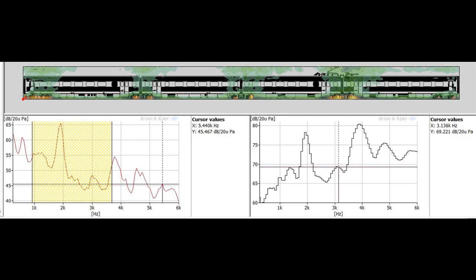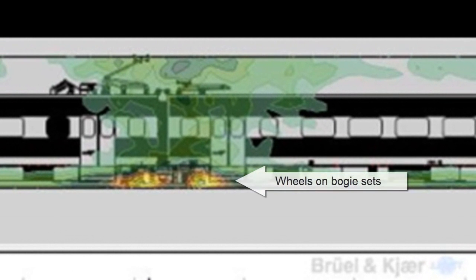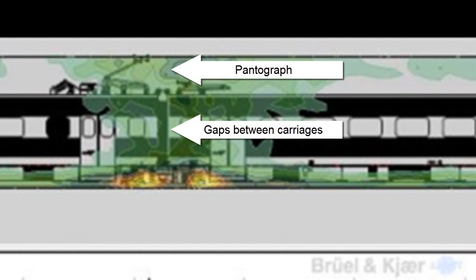Other sources of interest which can be detected and mapped using moving source beamforming are the wheels on the bogey sets, the gaps between the carriages and the pantograph.